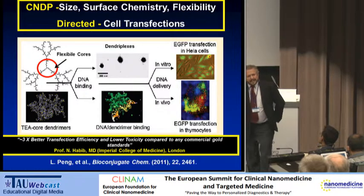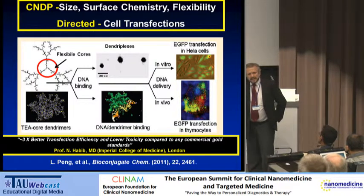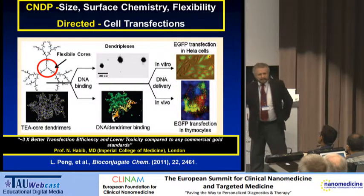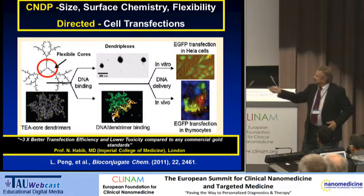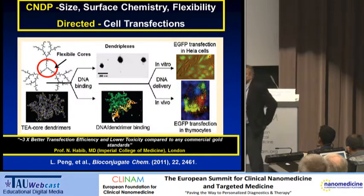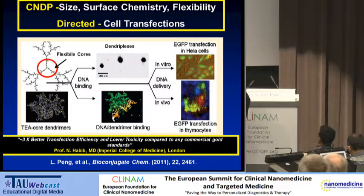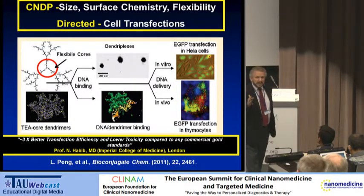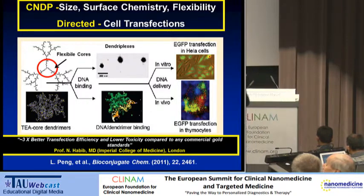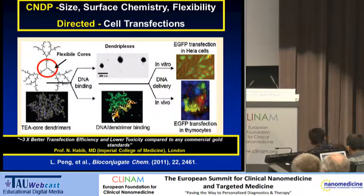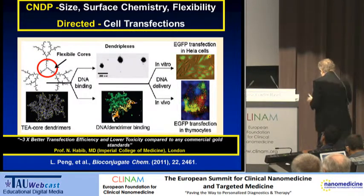However, almost two years ago, Rossi, Habib, and Ping came to me and said they could not scale up this dendrimer to kilogram quantities for the clinic and asked for help. So I became involved with them, and we used these critical nanoscale design parameters as a means to quickly get back to a dendrimer product that we could scale for the clinic. That's what the rest of this story is about.